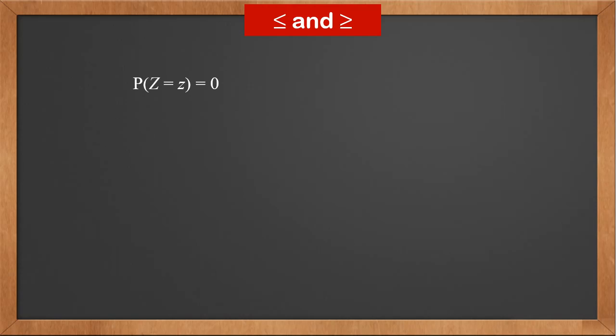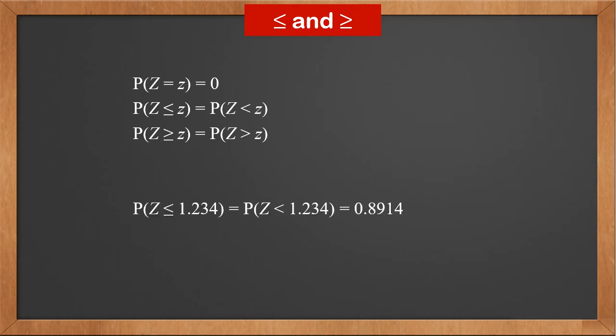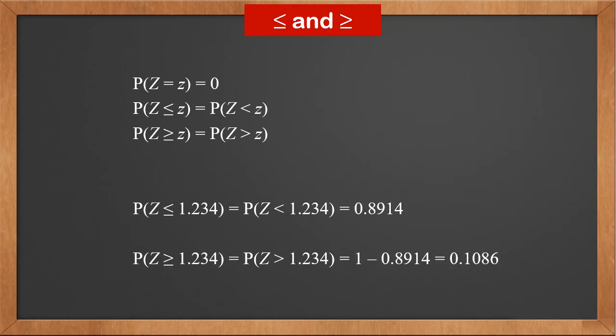In continuous probability distributions, the probability of Z equaling an exact value is 0, so P(Z = z) = 0. Therefore, it doesn't matter whether there's an equal sign. P(Z ≤ z) is the same as P(Z < z), and P(Z ≥ z) is the same as P(Z > z). For example, P(Z ≤ 1.234) = P(Z < 1.234) = 0.8914. And P(Z ≥ 1.234) = P(Z > 1.234) = 1 - 0.8914 = 0.1086.